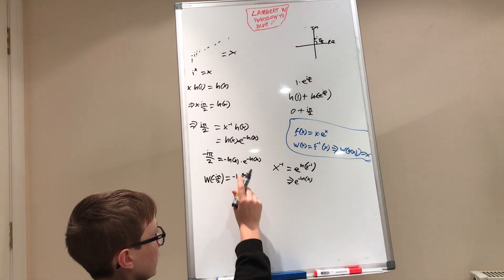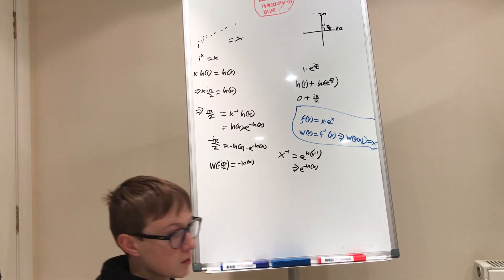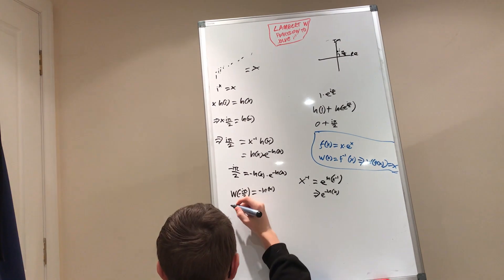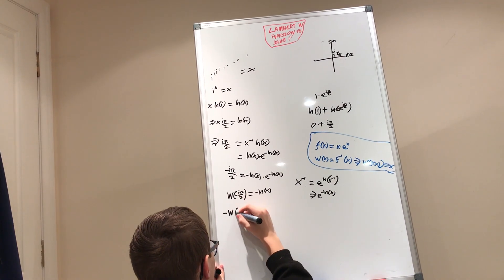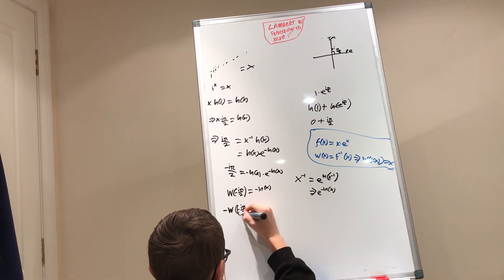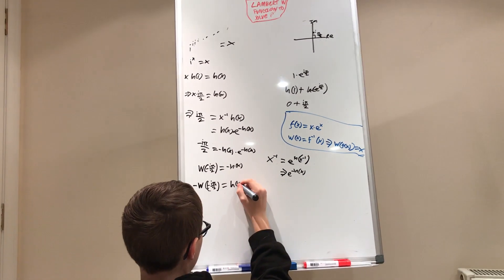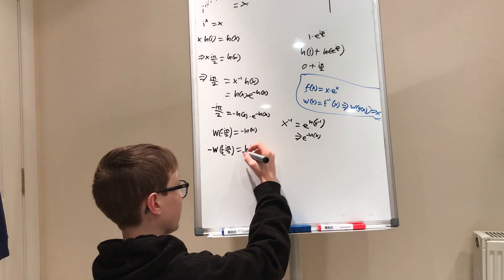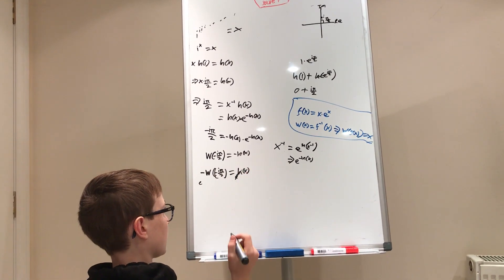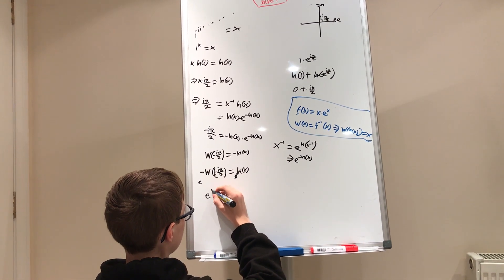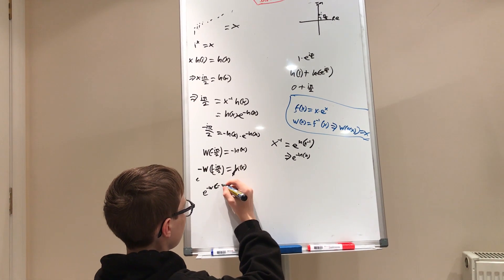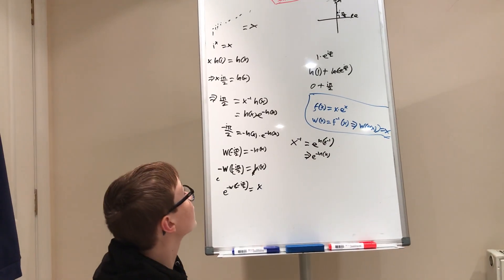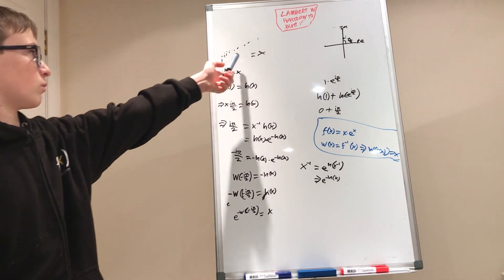What we've done here is utilized the Lambert W function to isolate negative ln of X. Now we just have to do some simple algebra. Multiply both sides by negative one, so the negative Lambert W function of negative i·pi over two equals positive ln of X. Then raise both sides as a power of e, because e to the power of ln(X) will cancel, leaving us with: X equals e to the power of the negative Lambert W function of negative i·pi over two. And that's what we were trying to solve for originally.